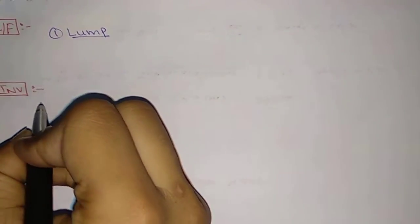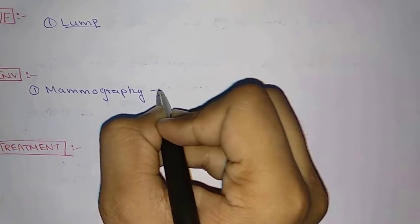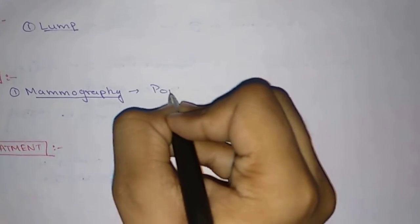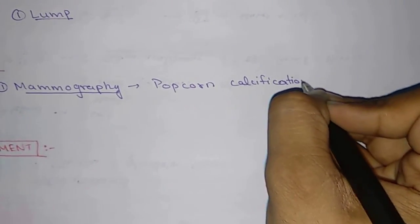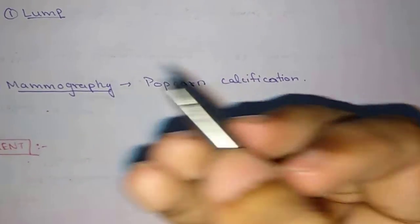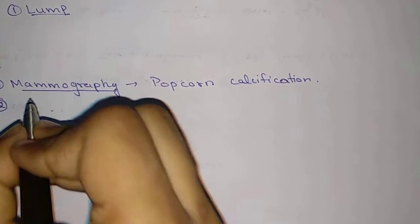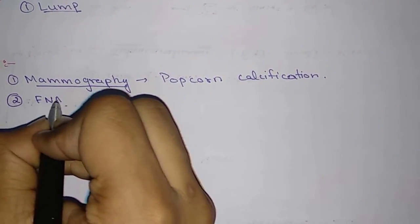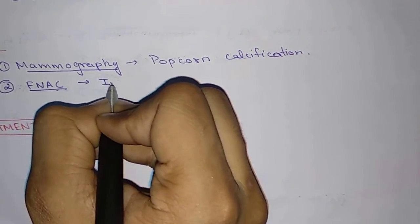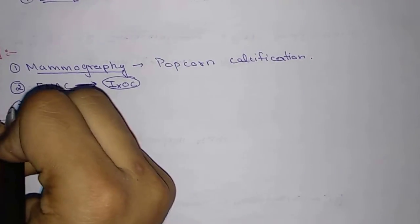The investigations you have to do are: number one is mammography, where you find popcorn calcification. These are macro calcifications present in benign condition, but if we find micro calcification we suspect malignancy. Second is FNAC (fine needle aspiration cytology), which is the investigation of choice. Last is ultrasonography, which is used to confirm solid nature.